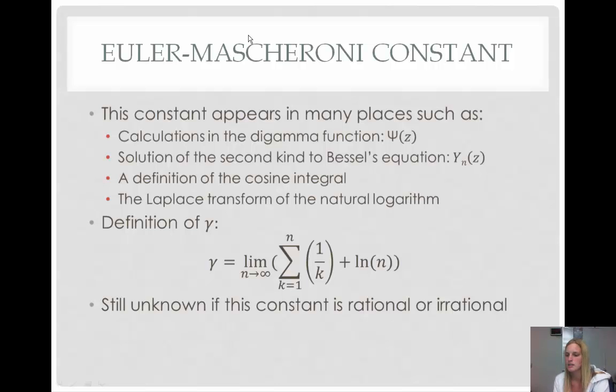Now, the definition of little gamma is the limit as n approaches infinity of a summation from k equals 1 to n of 1 over k plus ln of n. It is also still unknown if this constant is rational or irrational.